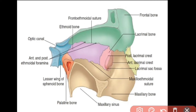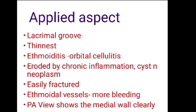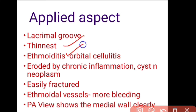Bleeding is more troublesome when the medial wall is injured because of the ethmoidal vessels. The medial wall can be easily visualized on PA view X-rays. In summary: it has the lacrimal fossa, it is the thinnest wall, ethmoiditis can spread to cause orbital cellulitis, it is easily eroded and fractured, ethmoidal vessels cause more bleeding, and it is visible on PA views.